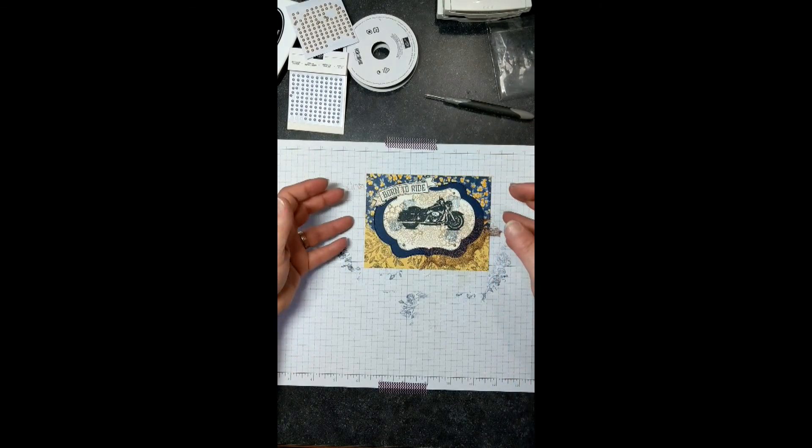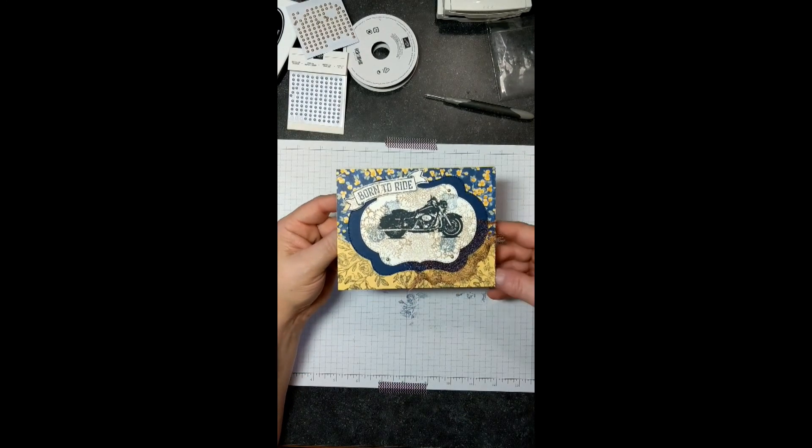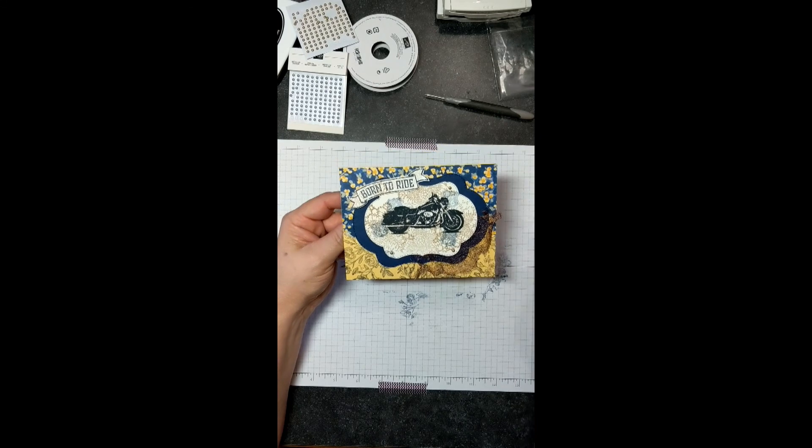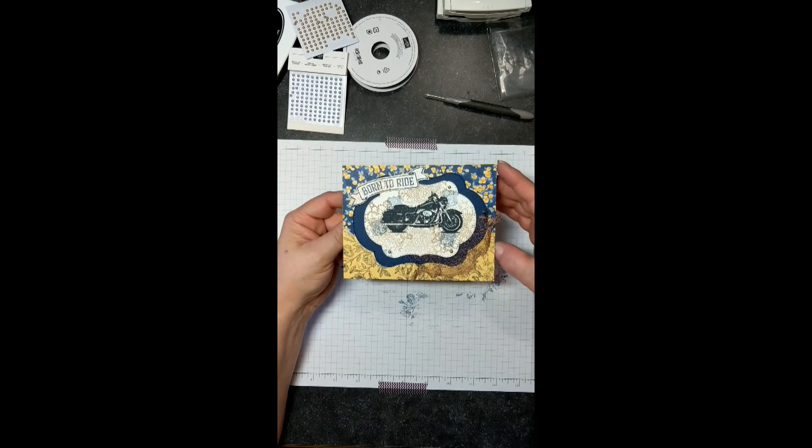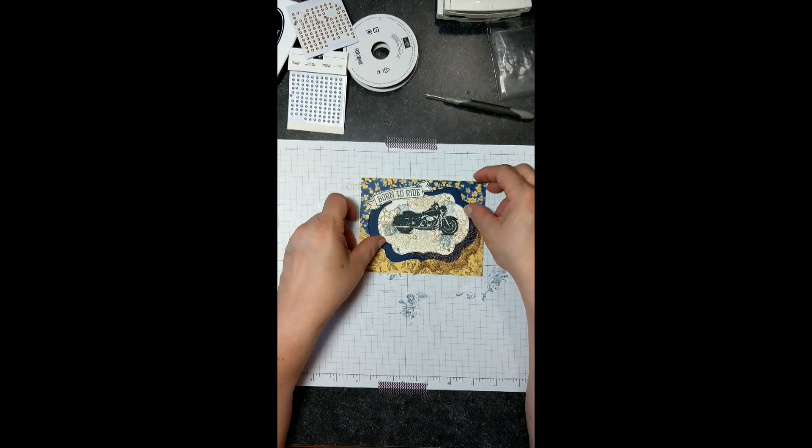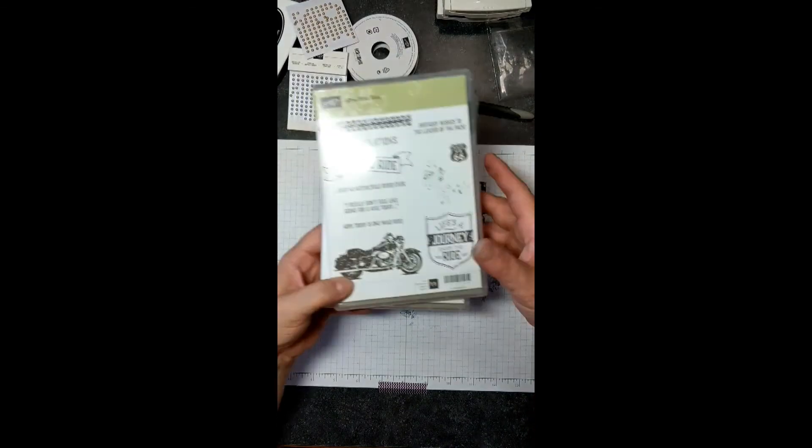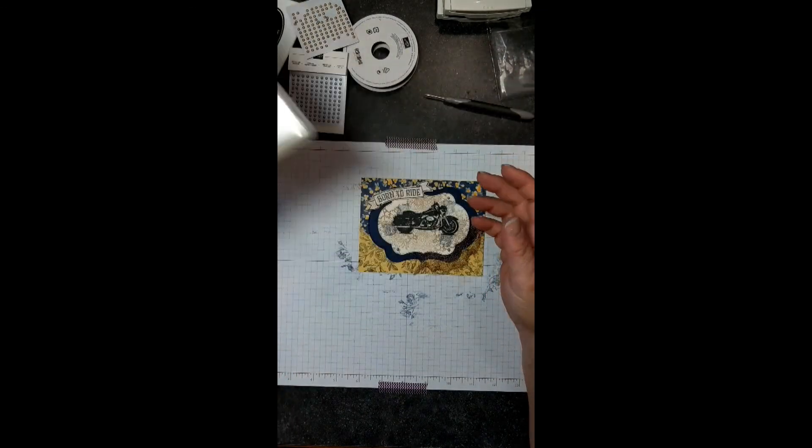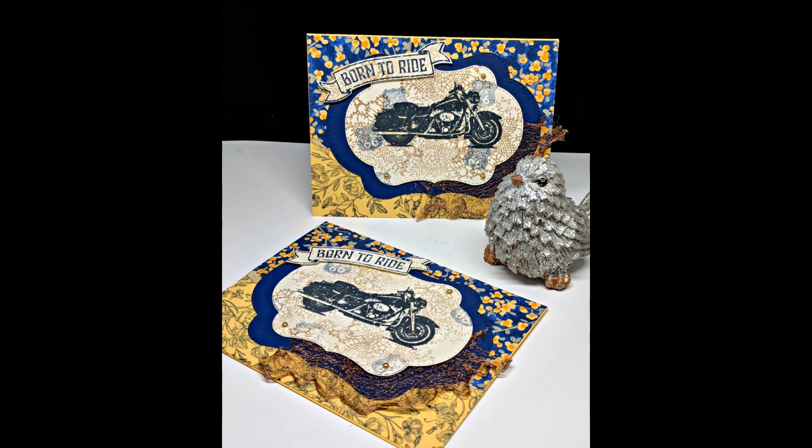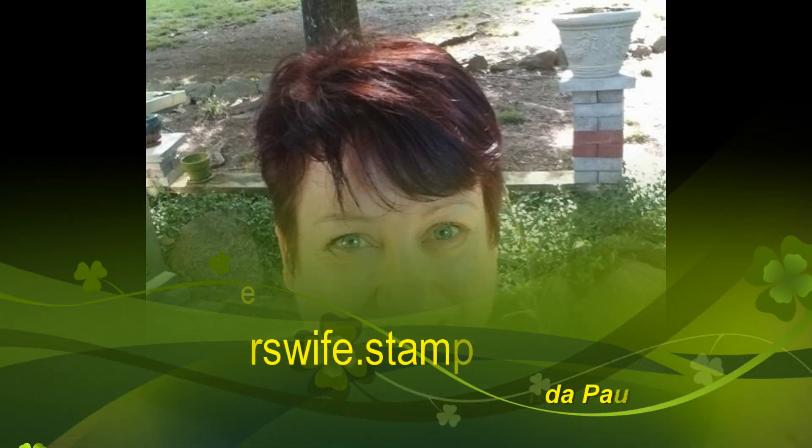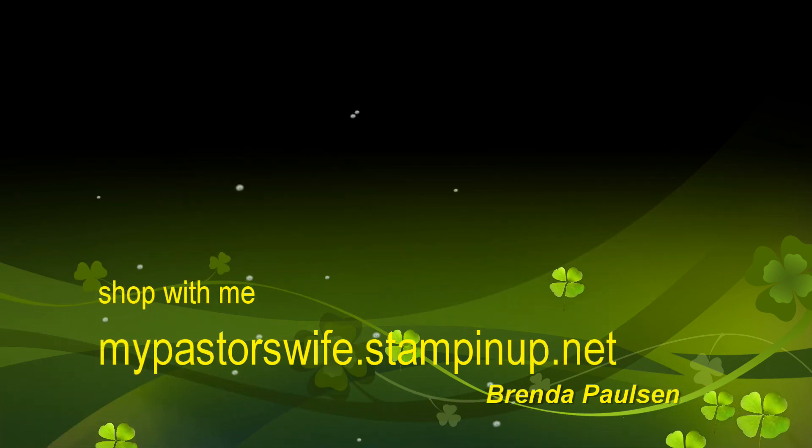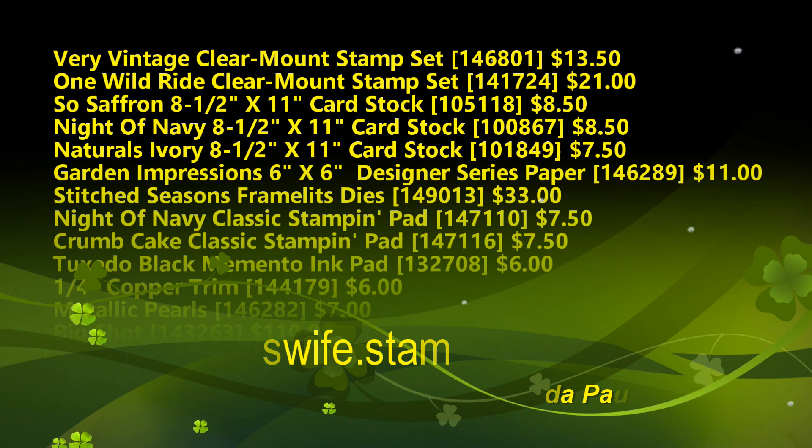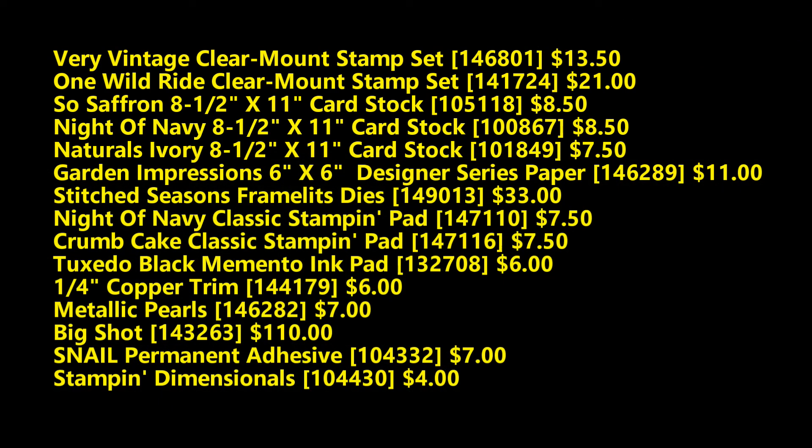Making sure that it lines up so it doesn't fall off the edge of our card. And there you have it, Born to Ride, a very vintage, almost a little bit of a nod to steampunk because we've got our copper and mechanical for sure. And then happy birthday. Thank you for joining me for this card. Again, you're going to want these great sets, One Wild Ride and Very Vintage. Thank you for joining me. We'll see you next time.